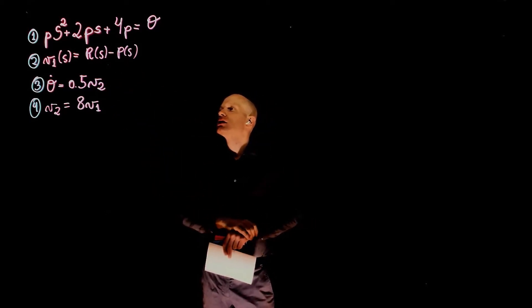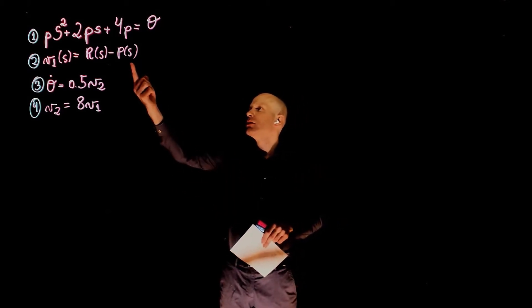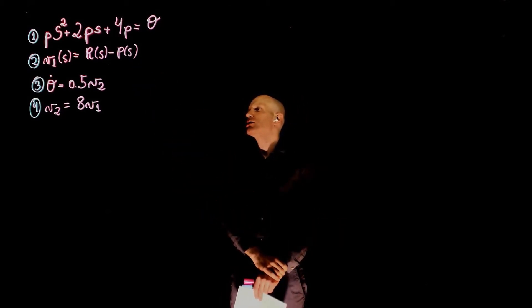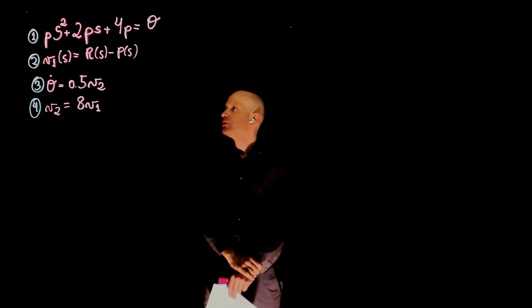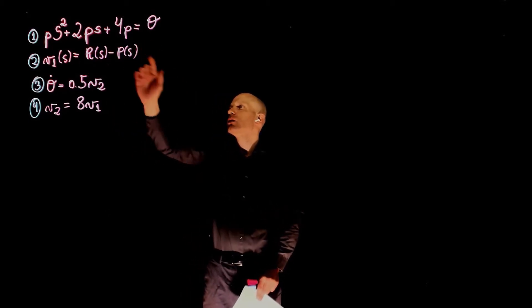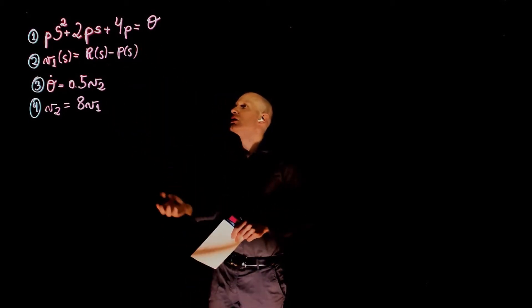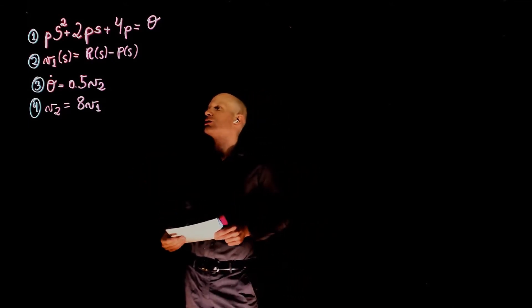We know from the problem that r of s is the desired position and p of s is the current position. If r is the desired position, that is the input of the system, and p is therefore the output. We have two internal variables described by equations 3 and 4, and we have a transfer function here that relates p and theta, where p is the current position, and theta is a motor position internal variable to the system.